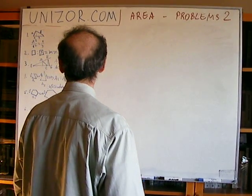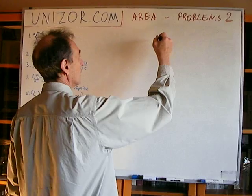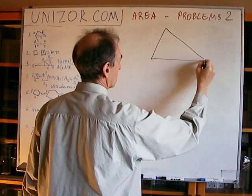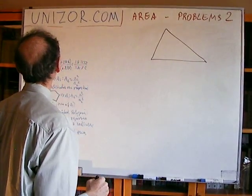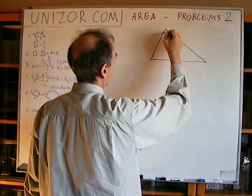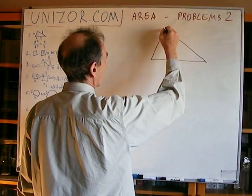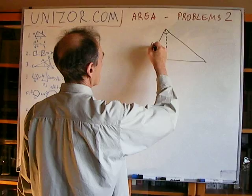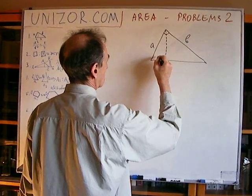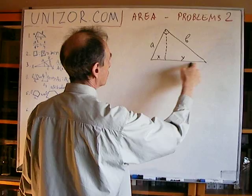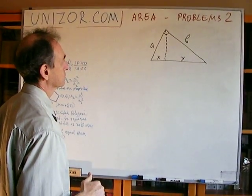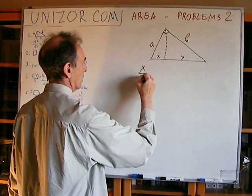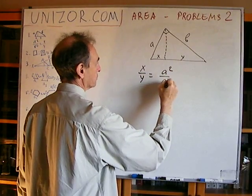Problem number one. So if you have a triangle which is a right triangle, and you draw an altitude towards the hypotenuse, then these two segments are related to each other as squares of the corresponding catheti.